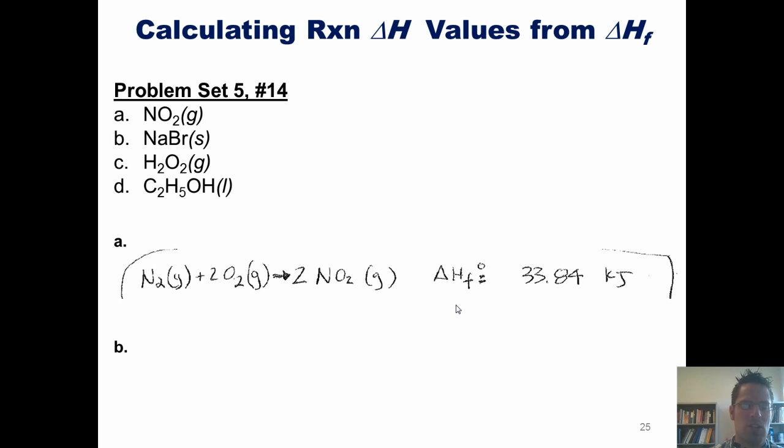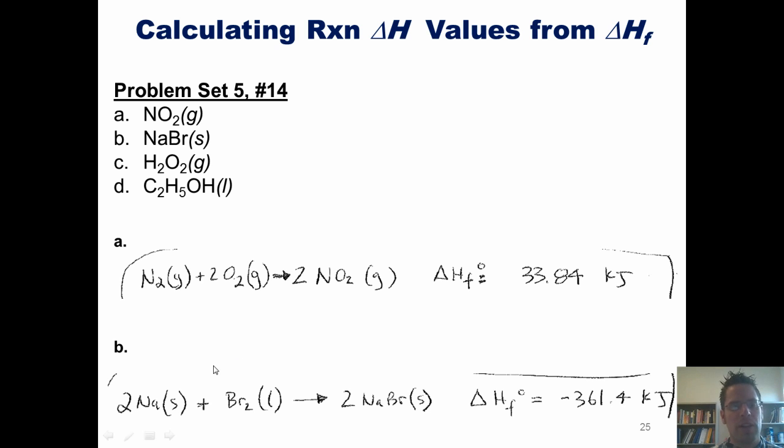Let's look at B, sodium bromide. If we look this process up in the back of our text, it gives us a delta H of formation of negative 361.4 kilojoules.